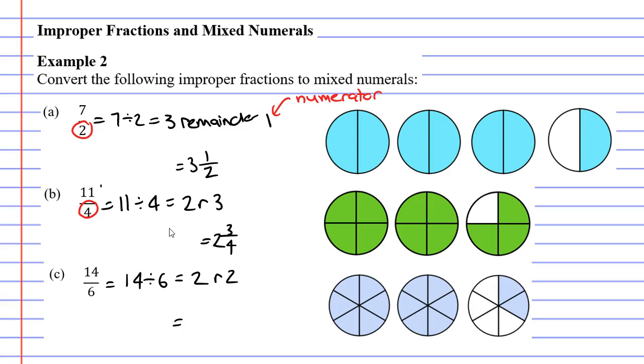Our mixed numeral will have a whole number of 2 and a numerator of 2 as well. Remembering that our improper fraction had a denominator of 6, so our mixed numeral will also have a denominator of 6. We can see that in the diagram at right. We've got 2 completely colored in circles, giving our whole number of 2, and 2 sixths of a fraction at the end.